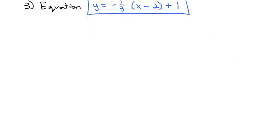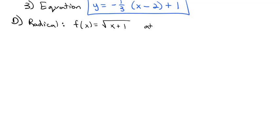One more example using both equations — this one involves a radical. We're going to find the derivative, or slope of the tangent line, of f(x) = √(x+1) at x = 8. First, f(8) = √(8+1) = √9 = 3, so we're talking about the point (8, 3).